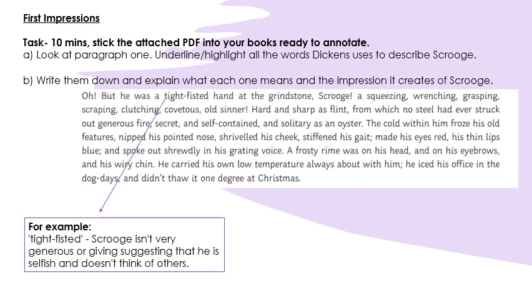Now that you've read the PDF, stick it into your books ready to annotate. Annotation is just like I've done here — a line coming from a certain part of the text that you're analysing, and then write down and explain what each one means. Look at paragraph one. Underline or highlight all the words Dickens uses to describe Scrooge. Write them down and explain what each one means and the impression it creates of Scrooge. For example, I've got 'tight-fisted' there — Scrooge isn't very generous or giving, suggesting that he's selfish and doesn't think of others.